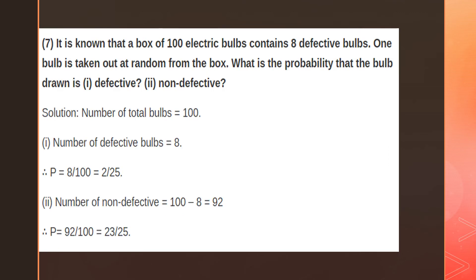It is known that a box of 100 electric bulbs contains 8 defective bulbs. One bulb is taken out at random. What is the probability that the bulb drawn is defective and non-defective? Total number of bulbs is 100, of which 8 are defective, so non-defective bulbs equal 100 minus 8, which is 92. The probability of getting a defective bulb is 8 by 100. The probability of getting a non-defective bulb is 92 by 100.